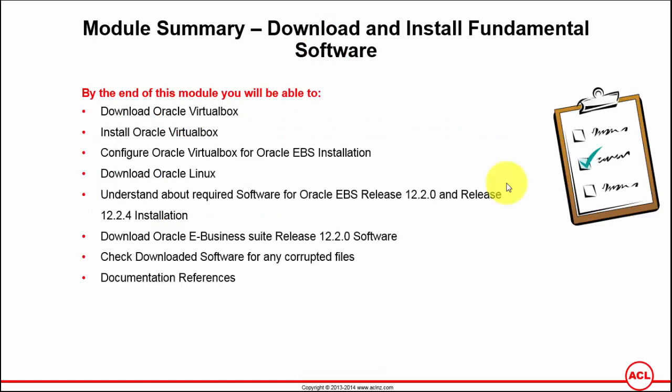Module summary: download and install fundamental software. By the end of this module you'll be able to understand where to download Oracle VirtualBox and how to install it. We'll then configure Oracle VirtualBox settings for Oracle E-Business Suite installation, including creation of a new VM, assigning the Oracle Linux operating system, assigning the processor and RAM, and creating a new virtual hard disk. We'll then learn how to download Oracle Linux and Oracle E-Business Suite software from Oracle Software Delivery Cloud, check the downloaded software for any corrupted files, and finally wrap up with a couple of important documentation references.